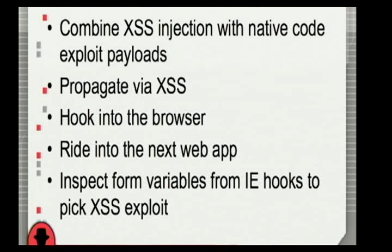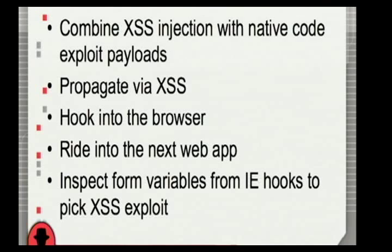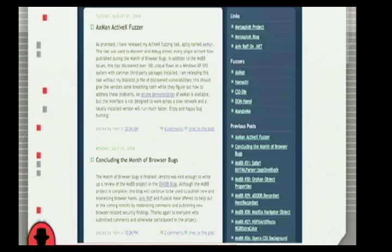There's a bit of heuristics here — we want code running in IE that, as you browse around, finds other potentially vulnerable sites. As you visit sites, it looks at form variables through IE hooks, and if you go to blogger.com and it sees a comment form, it will automatically inject to test whether cross-site scripting code can go in there. If that works, it propagates the same thing. The kernel of this is: you now have essentially an unguarded route to massive native code exploitation. All we're using cross-site scripting and the web for is the viral propagation mechanism.